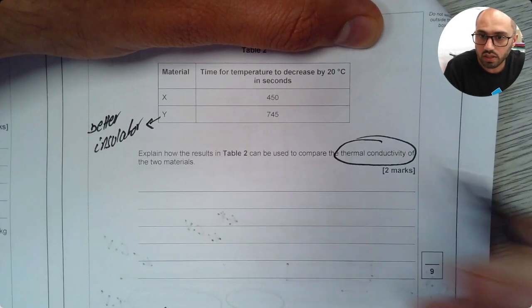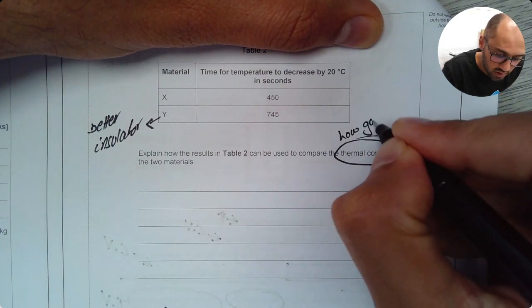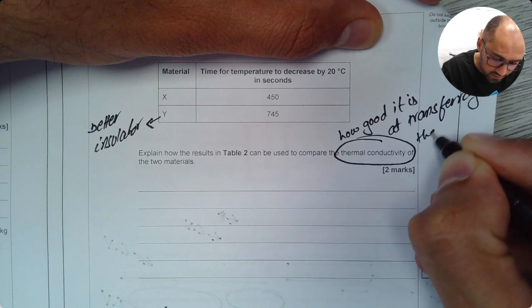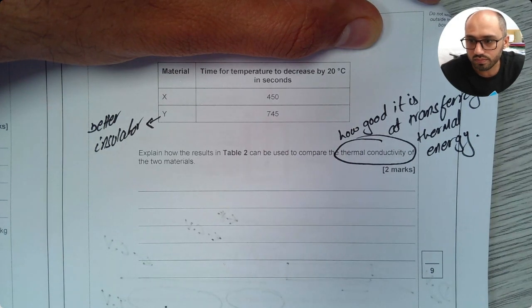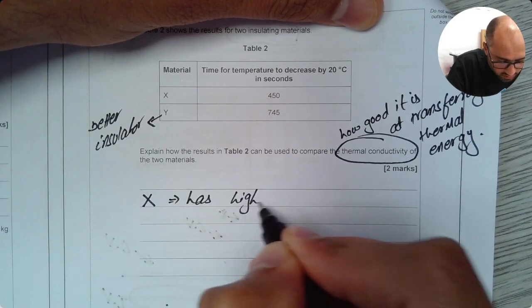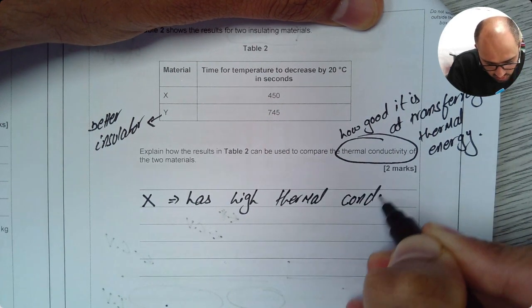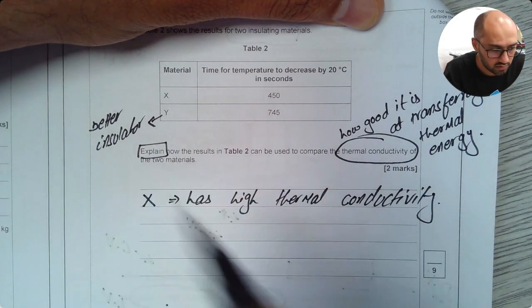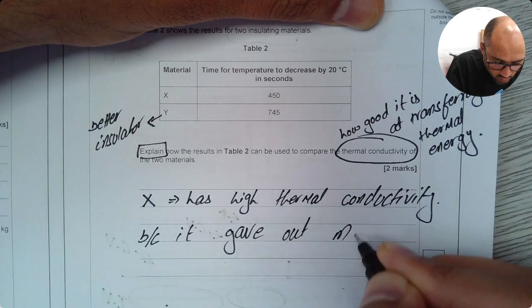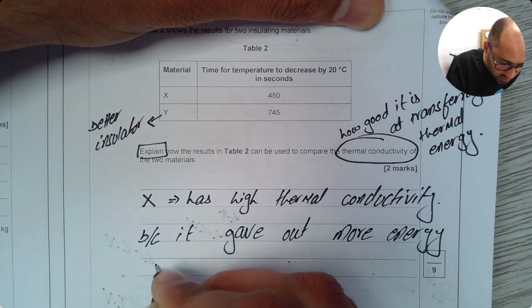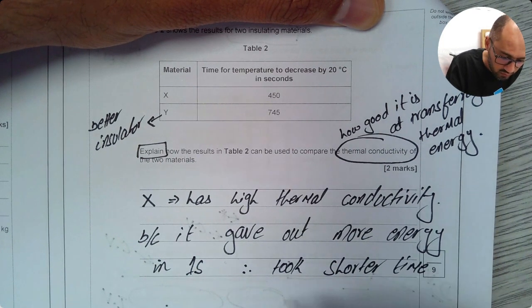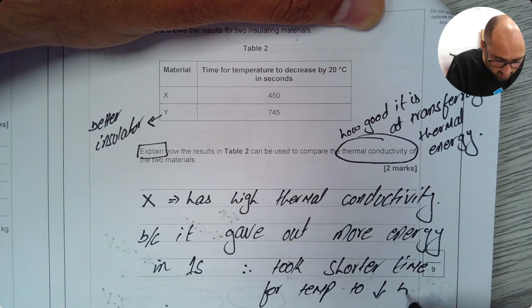What do we mean by word thermal conductivity? Thermal conductivity means how good it is at transferring thermal energy. So from the results I can say X has high thermal conductivity. Now I have to give reason because it says explain. I'll say because it gave out more energy in one second therefore took shorter time for temperature to reduce by 20 degrees.